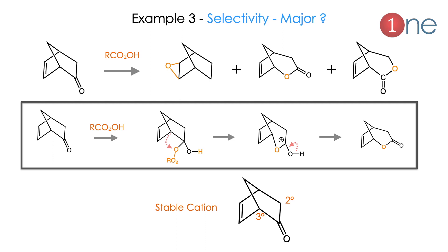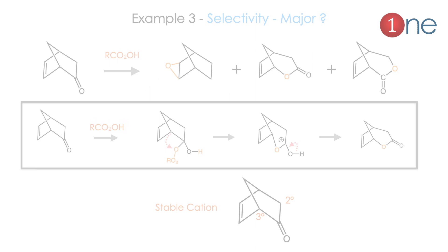The next example is a bicyclic ketone. Using a peracid, oxidation can occur at the double bond, ketone, between the ring, or at the bridgehead carbon. You must use the stable cation concept — the bridgehead cation is stable and also conjugated. The mechanism: attack of H and O, then migration of the bridgehead carbon. Finally, the ester with the bridgehead carbon forms. Understanding carbocation stability makes this straightforward.